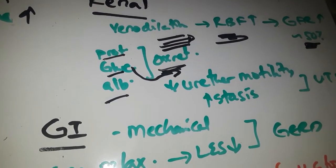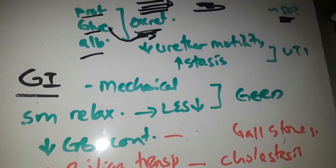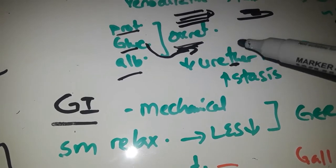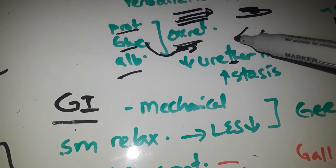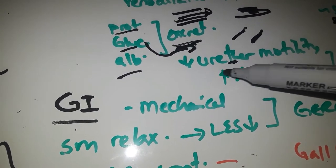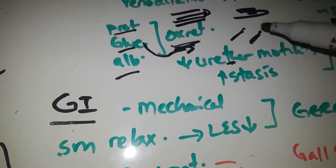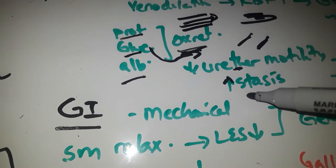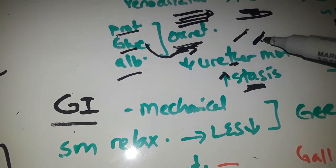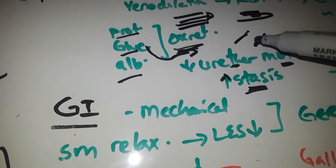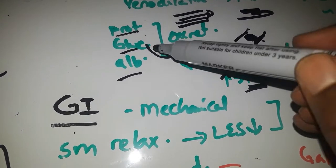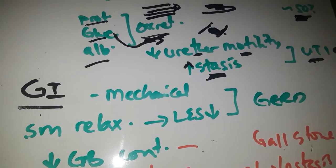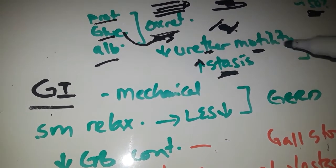Because of progesterone effect, ureteral motility will decrease. Ureter size will increase in pregnancy. Due to progesterone, the ureteral motility will decrease and there is stasis of urine. Because of ureteral dilation, decreased motility, and urinary stasis with mild glucosuria and amino acids in the urine, UTI risk is high in pregnancy.